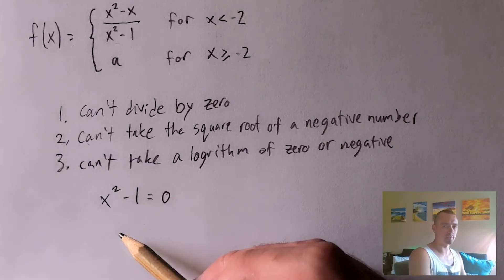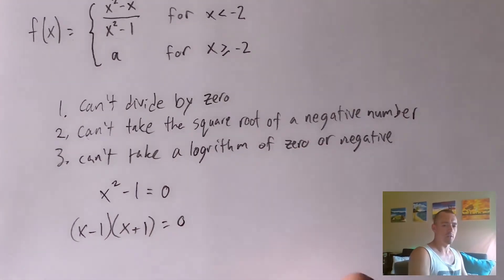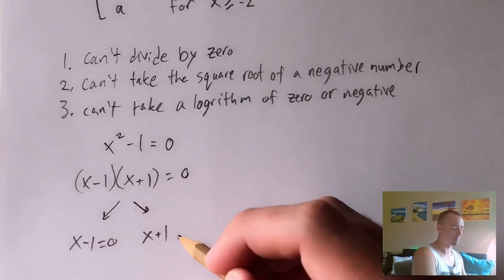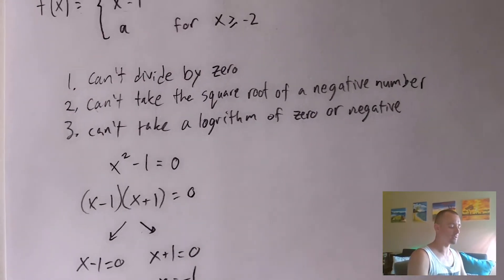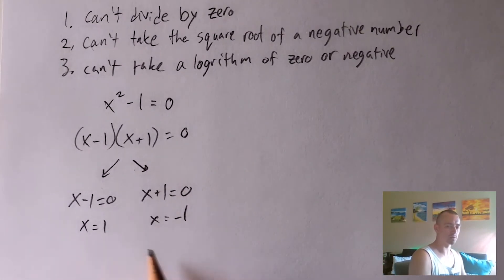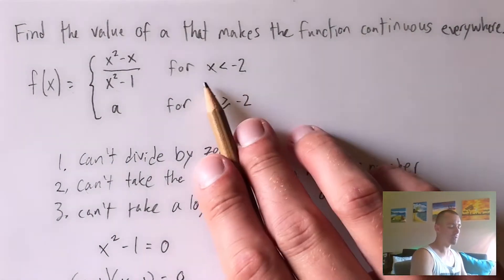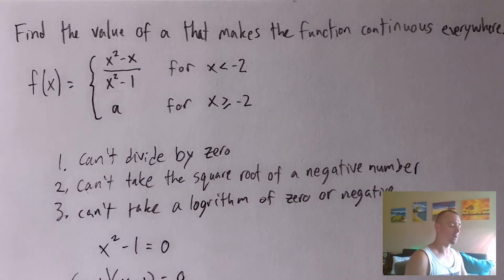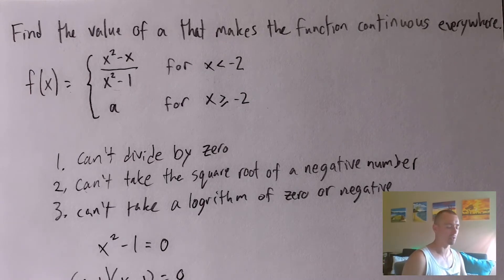To solve X squared minus one equals zero, we treat it as a difference of squares and factor it into X minus one times X plus one. This gives us X equals one and X equals negative one — places where the fractional function would not be continuous. Since X equals one and X equals negative one are not included in the domain of X less than negative two, they aren't going to be a problem. We're not using the part of this function that is discontinuous there, so it doesn't matter.